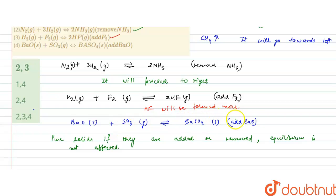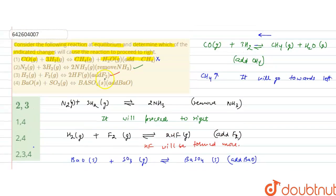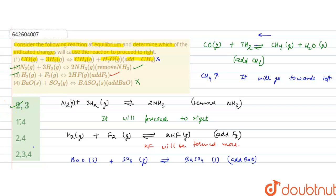If the equilibrium is not affected, it will not cause the reaction to proceed to right — it will remain as it is. So this option is also not correct. The correct options, that is the reactions which will proceed to right with the indicated changes, are the second and third — options two and three. So the correct answer is option A, which is two and three.